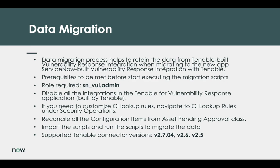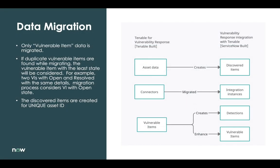The update set and the scheduled job attached to the KB should be imported into the instance. These scripts support versions 2.5, 2.6, and 2.7 of the Tenable connector. Only the active vulnerable item data is migrated. If duplicate vulnerable items are found while migrating, the vulnerable item with the least state will be considered. If there are two vulnerable items — one in open state and one in resolved state — the one with the open state will be migrated. Discovered items are created for the unique asset IDs associated with the vulnerable item.